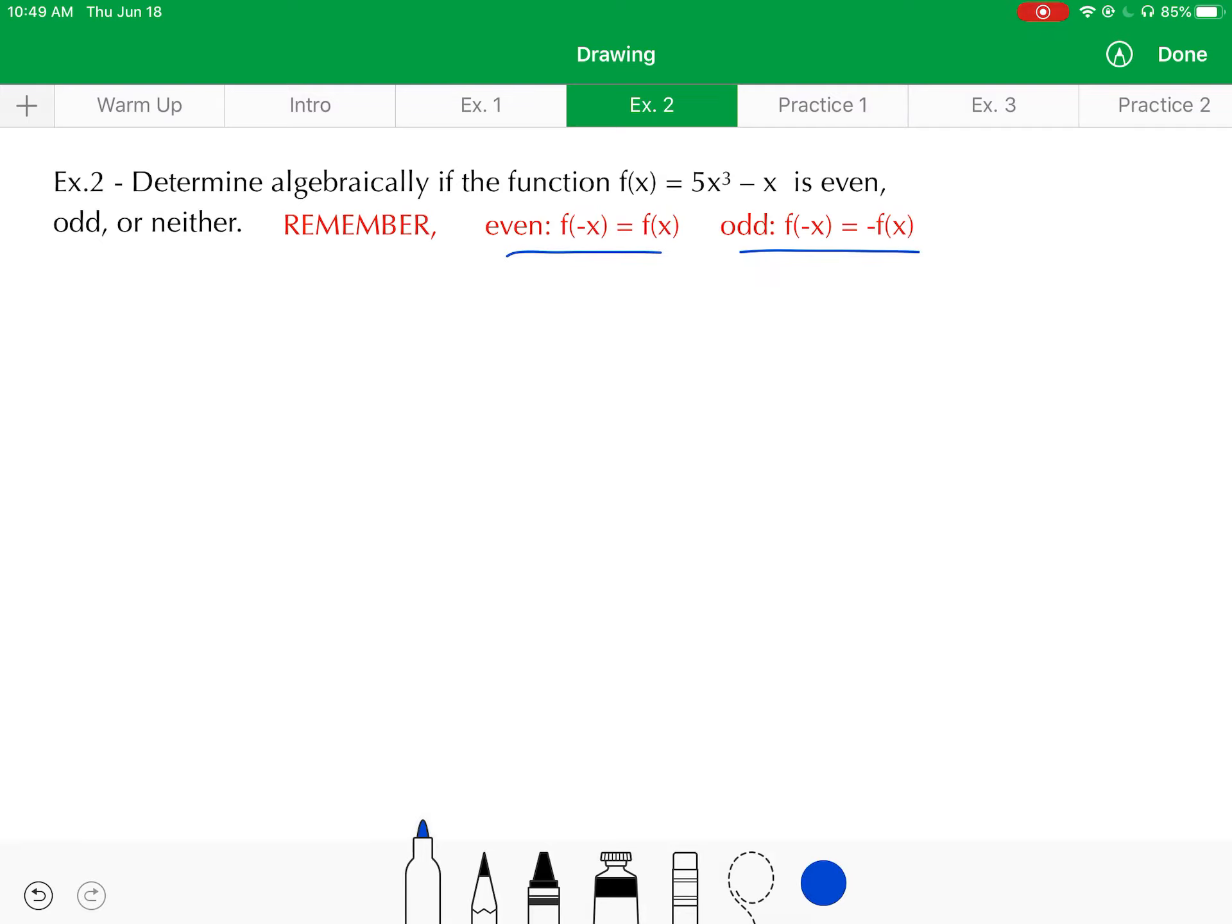Remember, if you are even, we just saw from the applets that evaluating the function f with a negative x should give me the same thing as if I evaluated with positive x. And if it were odd, evaluating with negative x should give me the opposite as if I evaluated with positive x. So either way, we're going to begin this process by trying to find f of negative x.